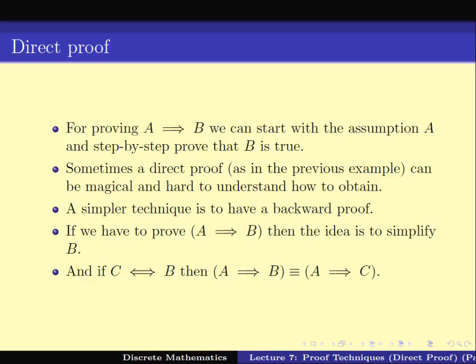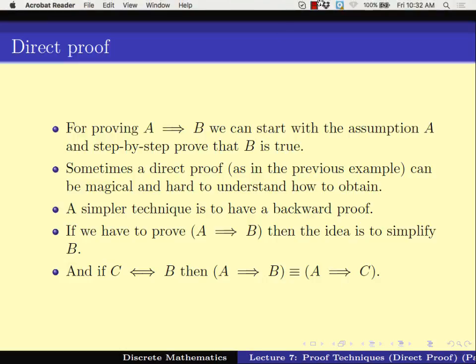So these are the two proof techniques. To summarize: for proving A implies B, we can either start with assumption A and step by step prove B is true, or we can do the backward proof — simplify B to C, and then proving A implies B is the same as proving A implies C, which is an easier thing to prove since B has been simplified. This brings us to the end of this video lecture. We will continue our study on constructive proofs in the next video lecture. Thank you.